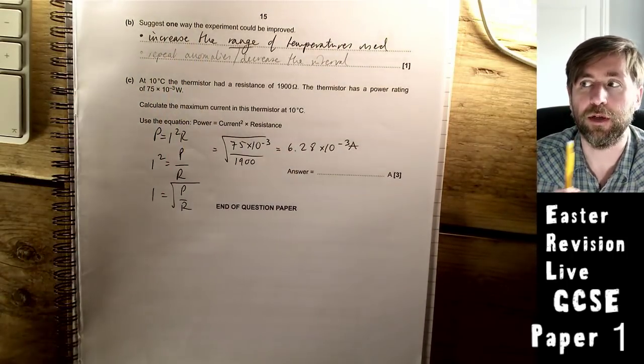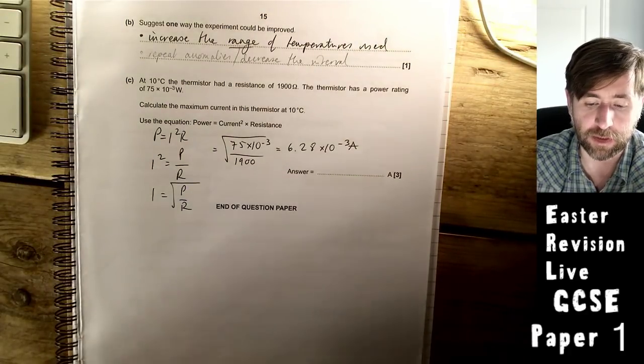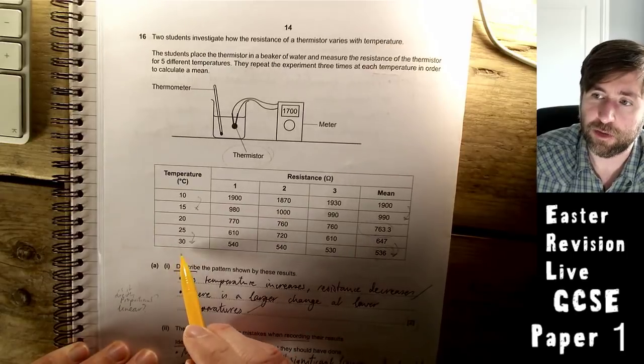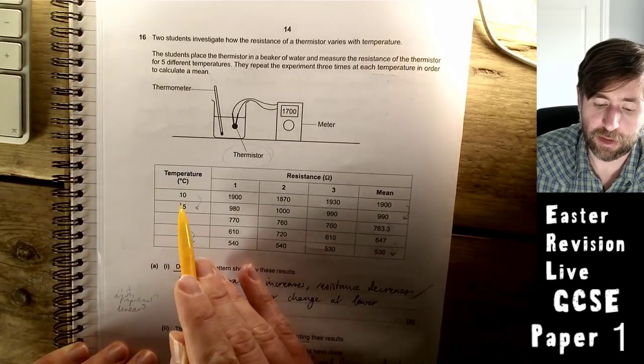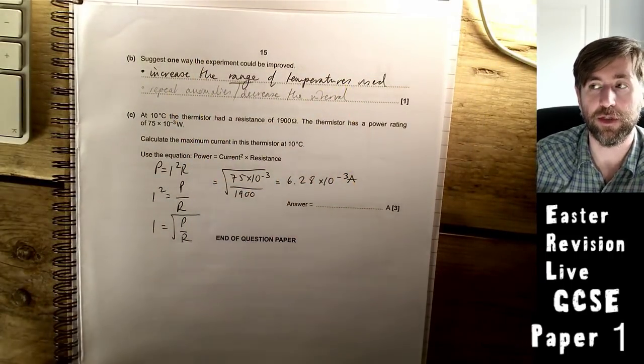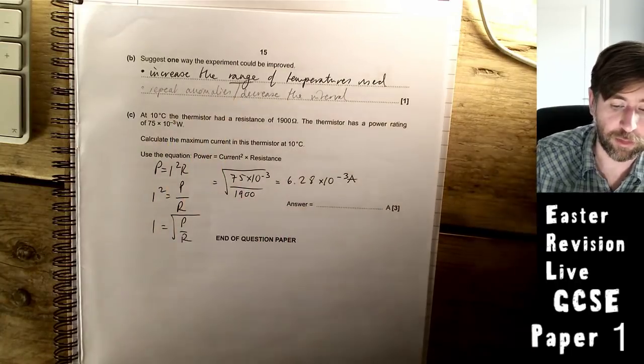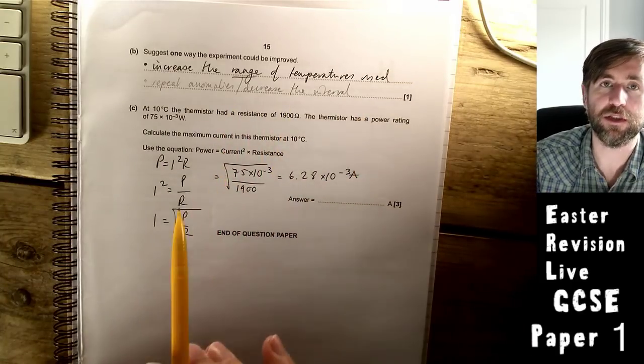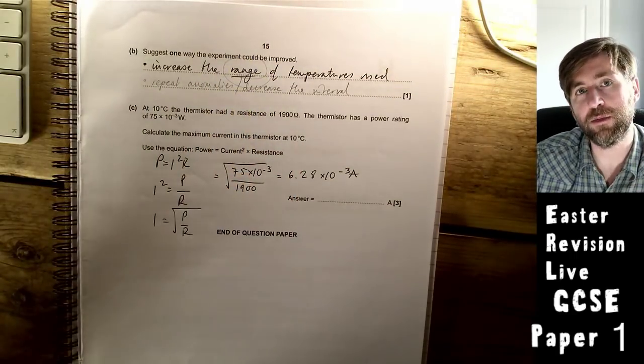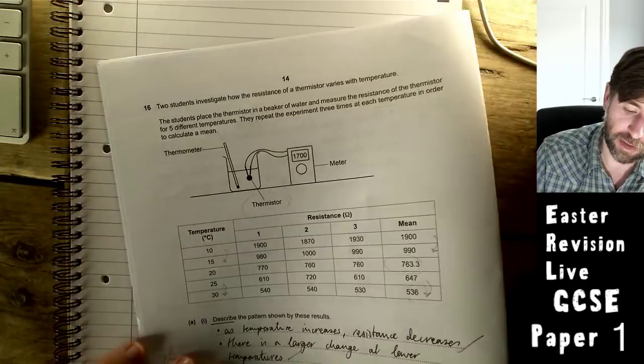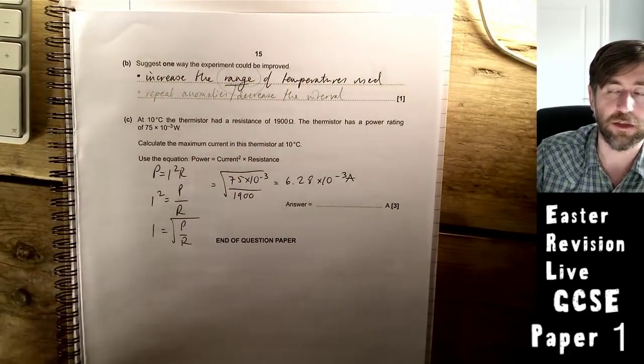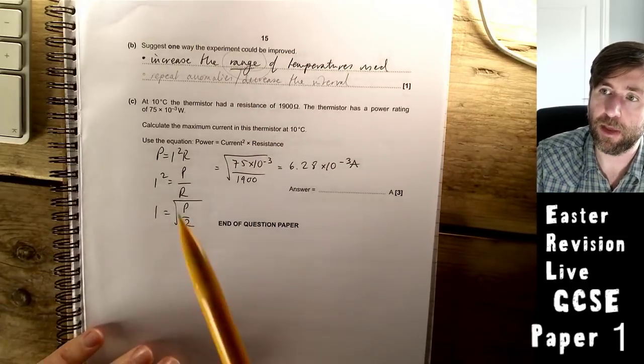Suggest one way the experiment could be improved. Now we're evaluating the method. Increase the range of temperatures used. You could very easily change this. You could get ice and get zero, and you could get hotter water all the way up to 100 degrees Celsius. A lot of people said test more temperatures, and you wouldn't get the marks. You could have said repeat for the anomalies, decrease the interval. It needs to be quite specific. Just saying do more temperatures is not the same as increase the range.